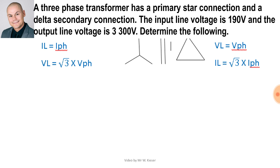A three-phase transformer has a primary star connection and a delta secondary connection. The input line voltage is 190 volts and the output line voltage is 3300 volts. When we see the word three-phase we must remember square root three in our formulas. When working with equations we use phase values, and unless stated we assume line values. On the secondary side, delta connected, VL is equal to V phase, and the voltages given are our line voltages.